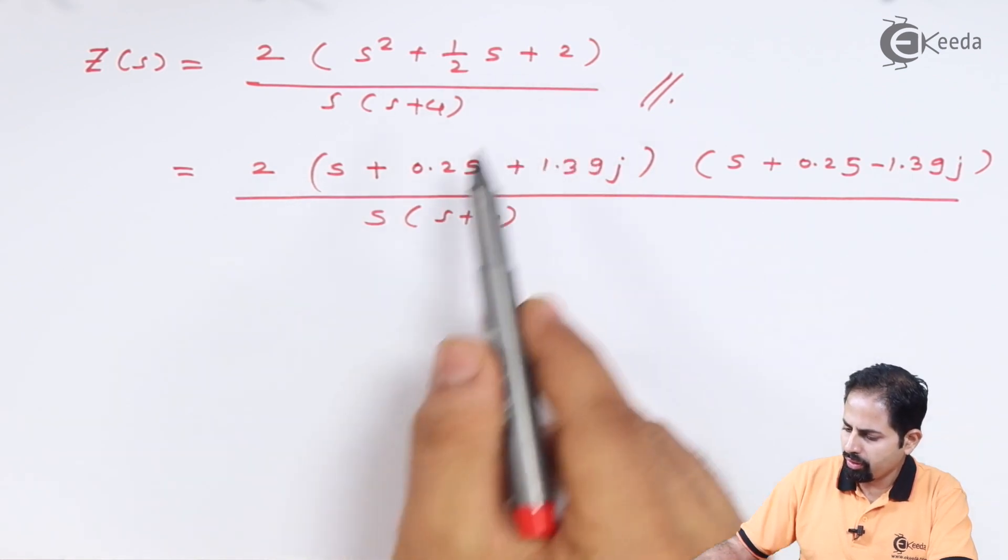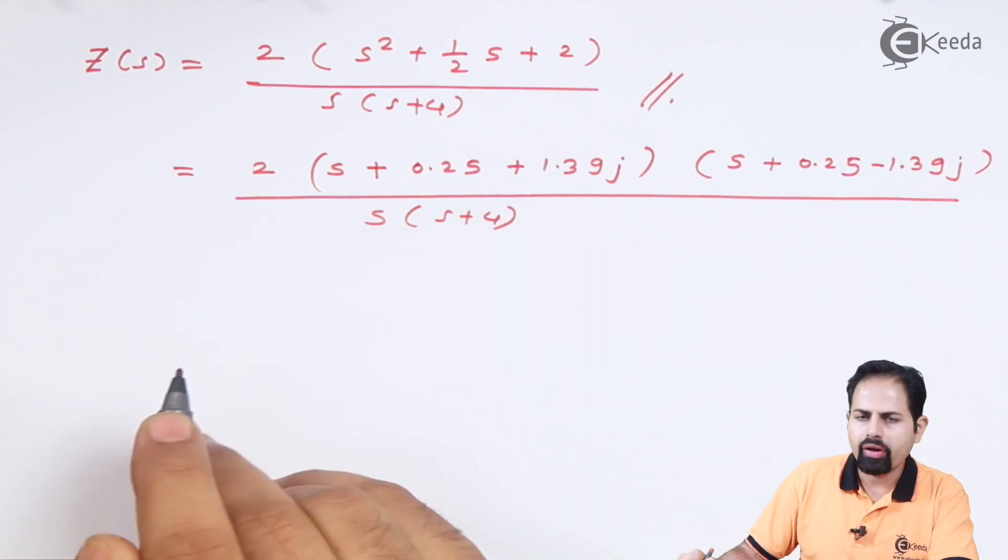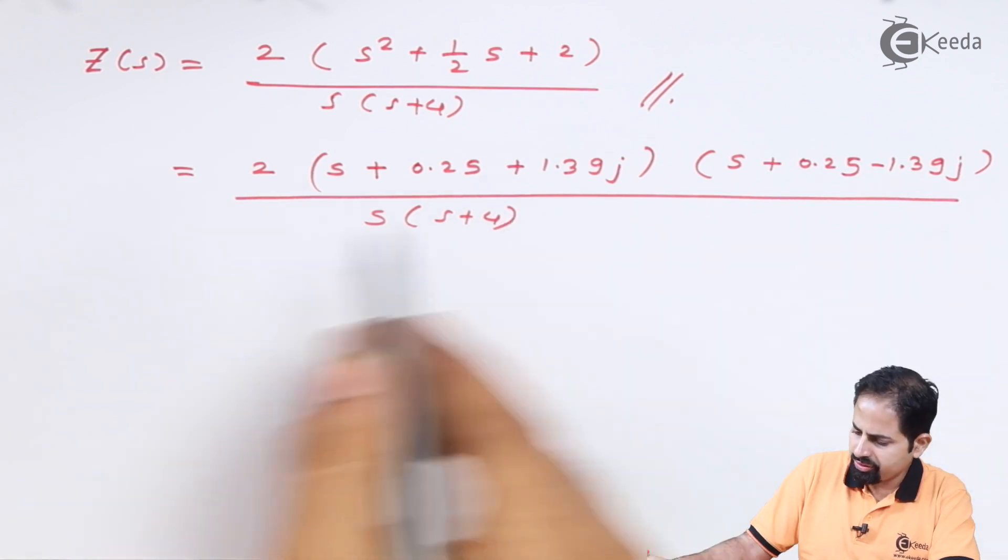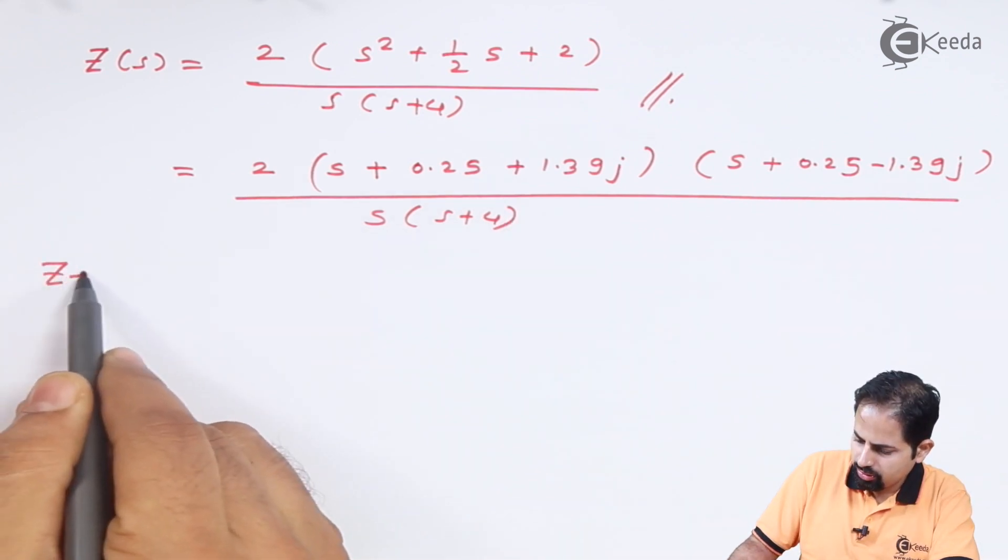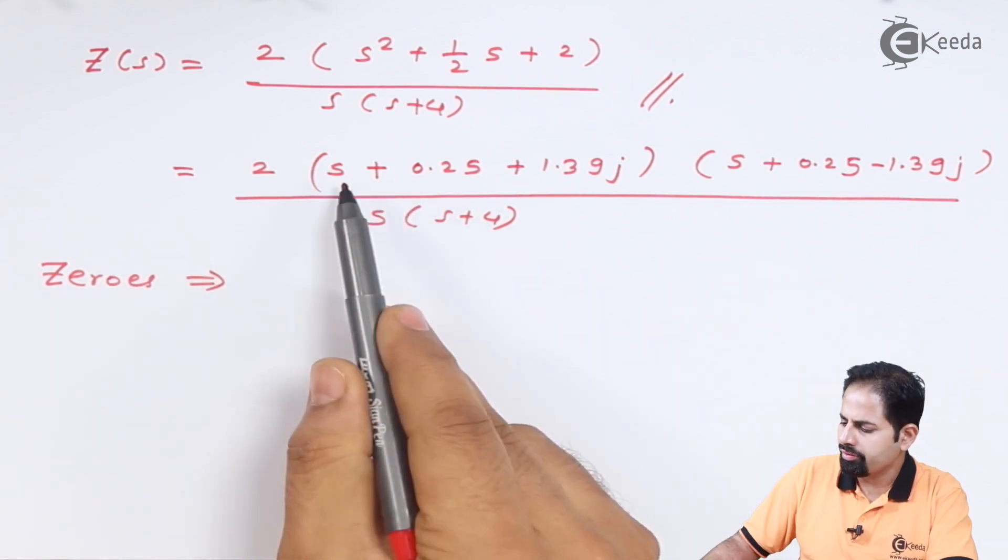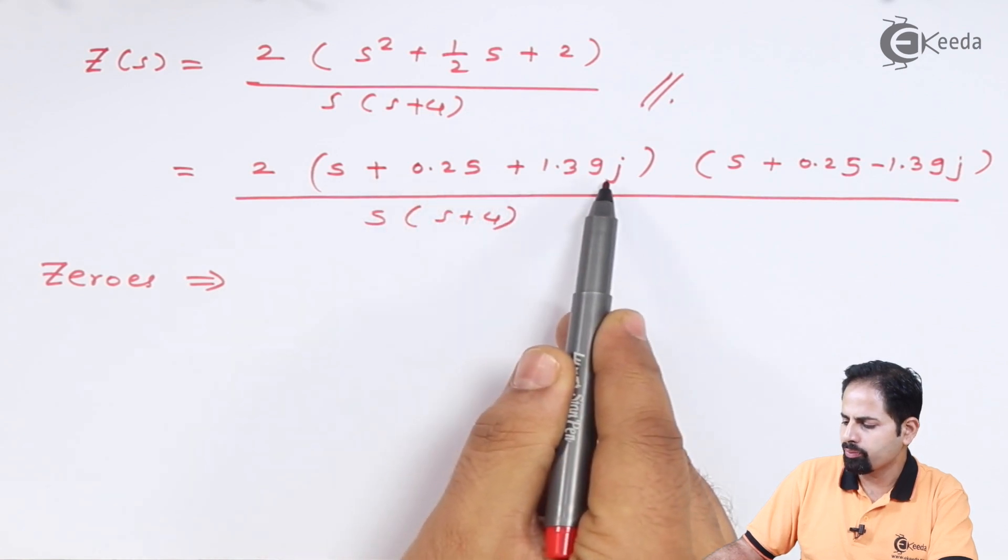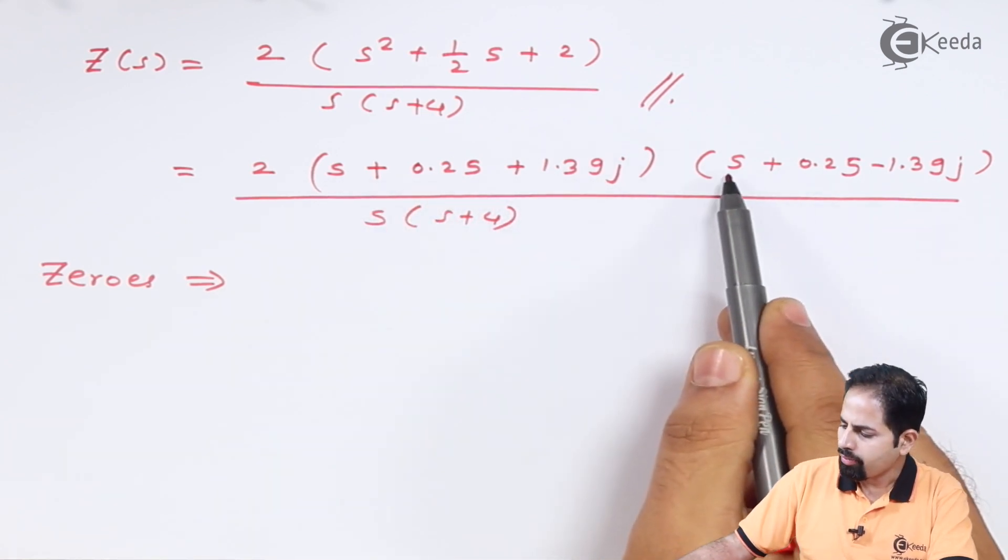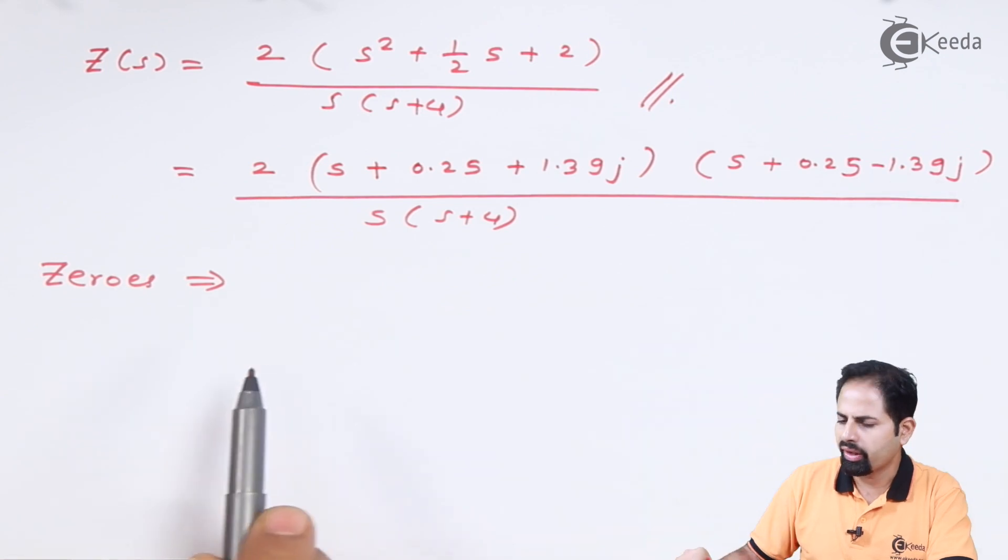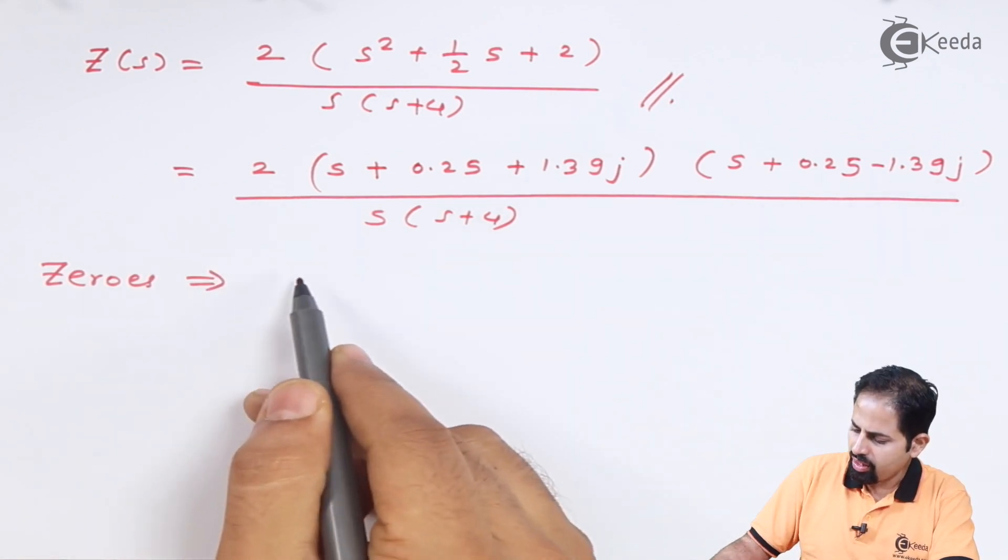This numerator polynomial has complex roots. Now let us determine the zeros first. Whenever s takes the value -0.25 - 1.39j or -0.25 + 1.39j, the numerator will drop to zero. So there are two zeros.